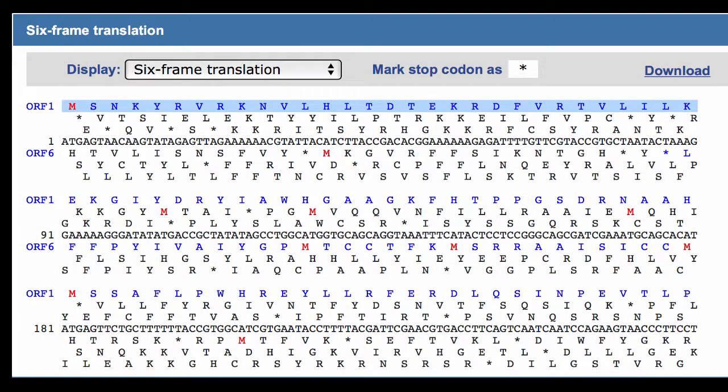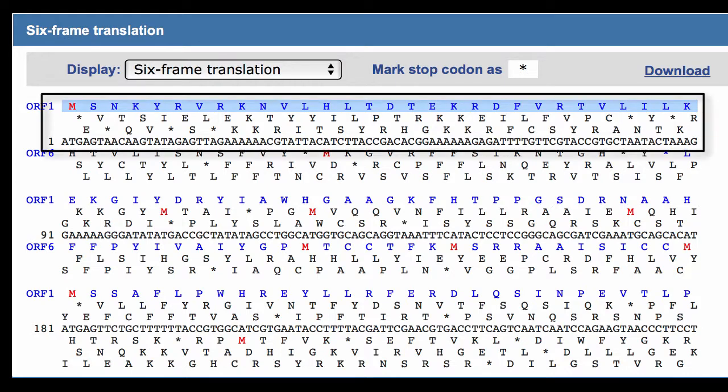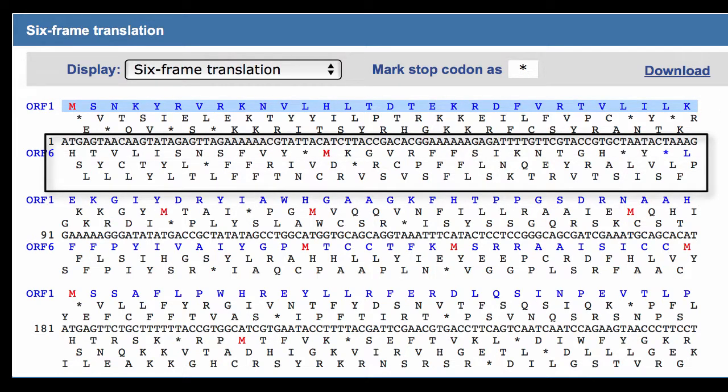Now let's see what happens with the frameshift mutation. This image shows a six-frame translation from the NCBI. We can see the six possible reading frames that could be used to translate a sequence of DNA. The three reading frames above the sequence would have the same sense as the sequence in the middle. The reading frames below the sequence would use the opposite strand of DNA.